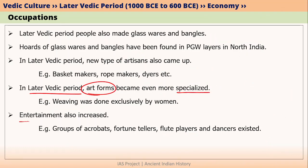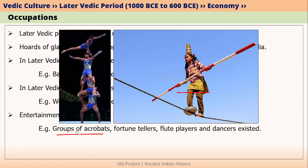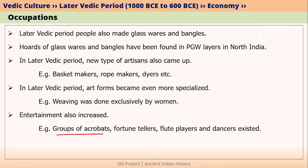There were also people involved in entertainment. For example, there were groups of acrobats — as you can see in this picture showing acrobatics. Such acrobats were present in the later Vedic period. Fortune tellers were also there, as well as flute players, other musical instrument players, and dancers. All these were part of the later Vedic economy.